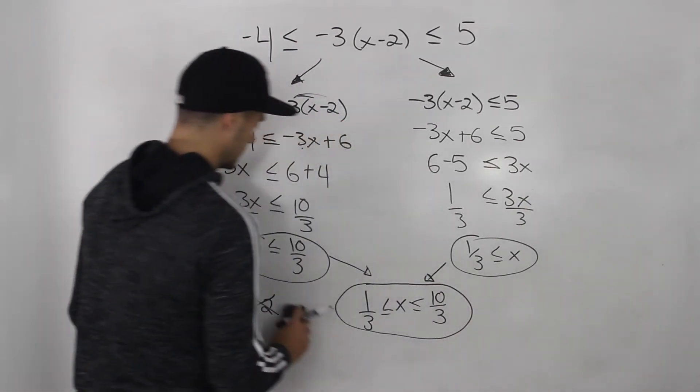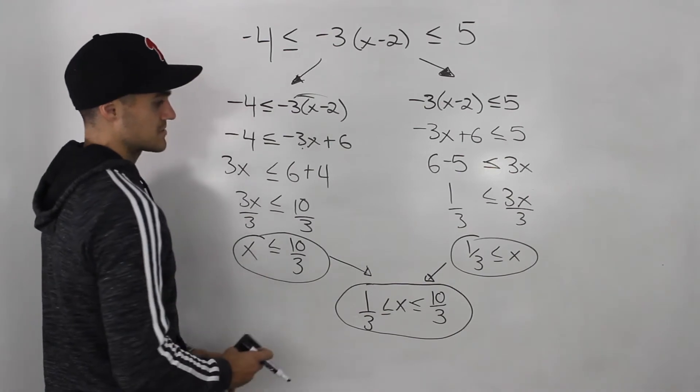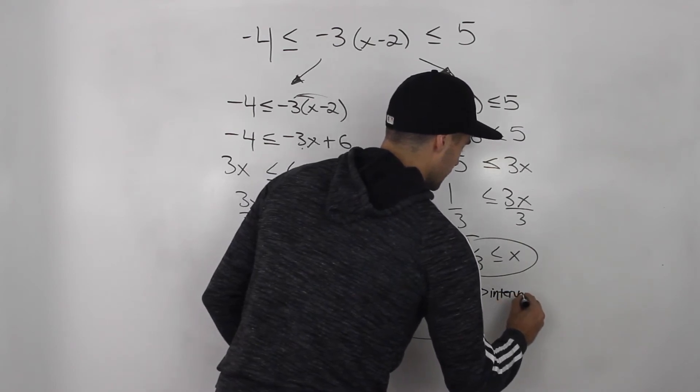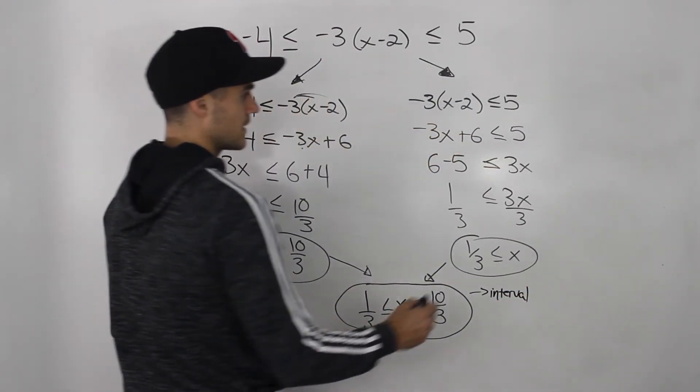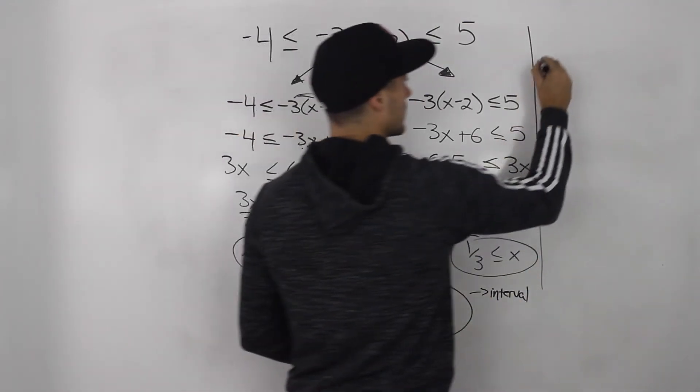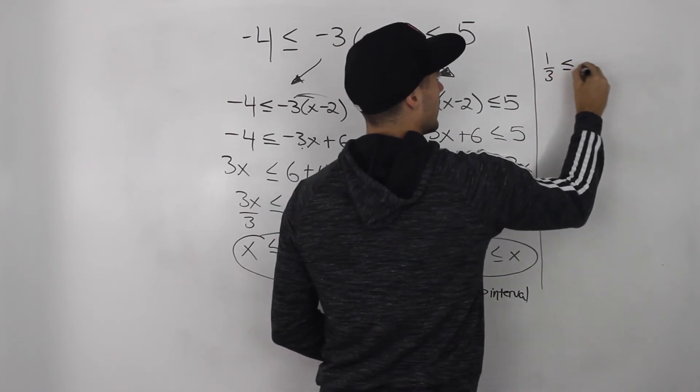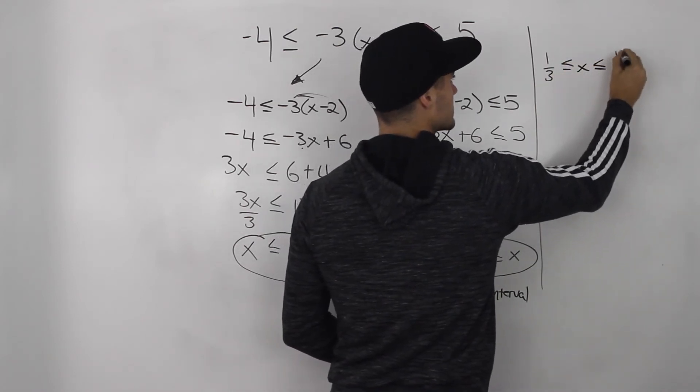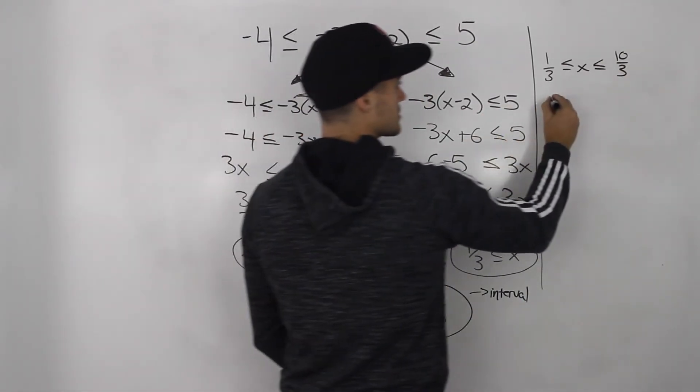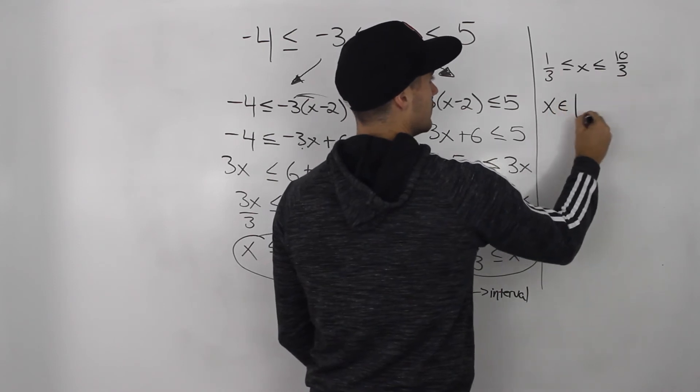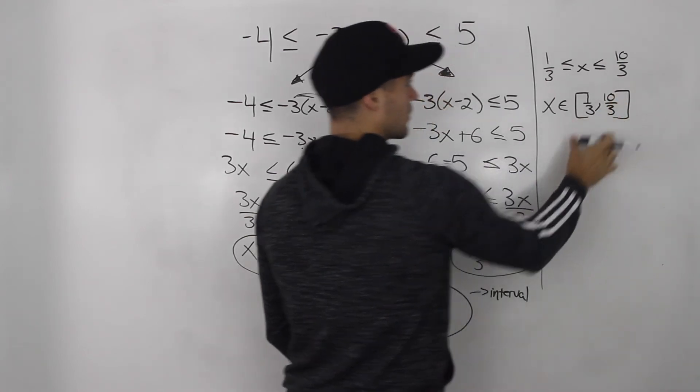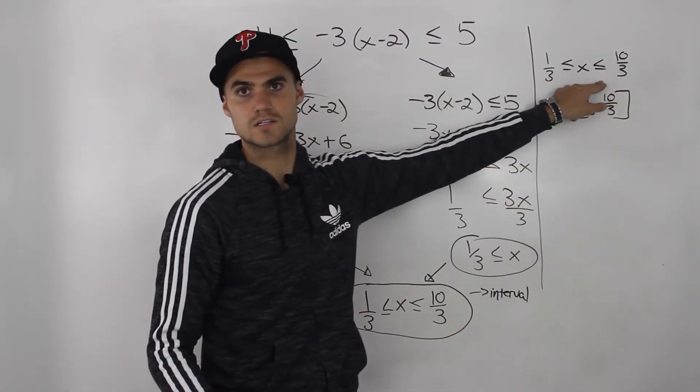Now, there are multiple ways to express this solution. So this is interval notation. You can also express this solution with set notation. So let's maybe do that up here. So you can express that in set notation. So x can be an element from 1 over 3 to 10 over 3. And those are square brackets because notice that we have the equal signs as well.